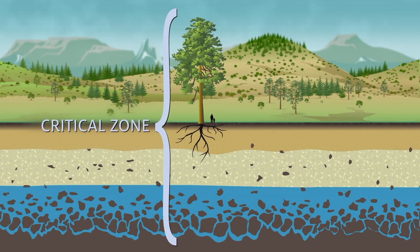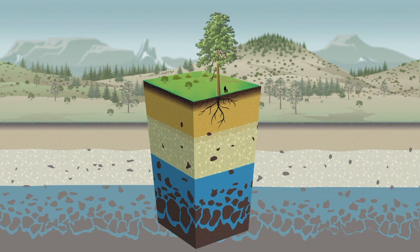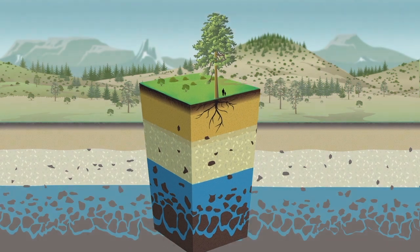The Critical Zone extends from the tops of the trees down through the soil to the groundwater. It is the layer where air and water and soil and rock all meet and interact to make life possible.